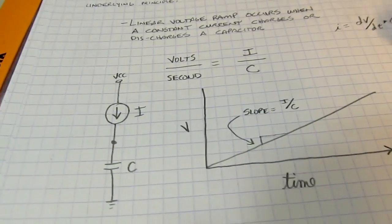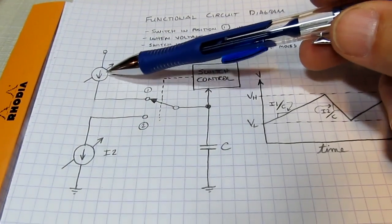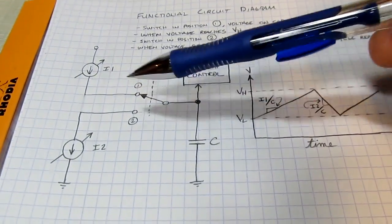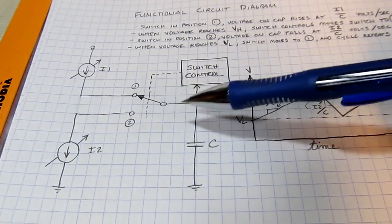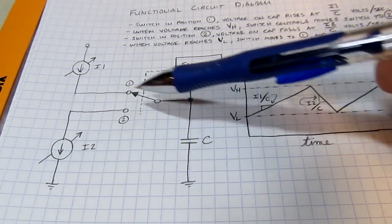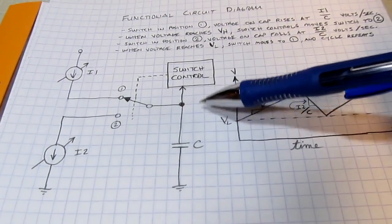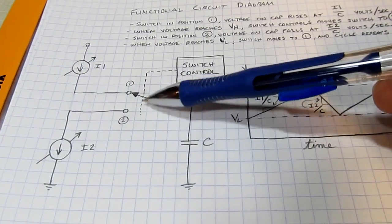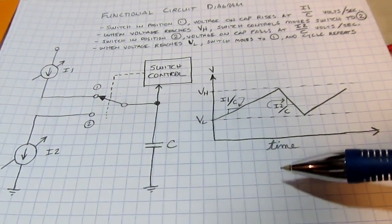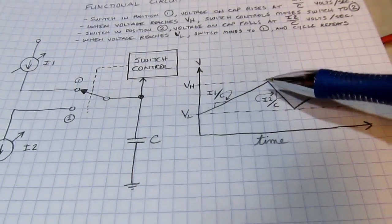Let's look at the underlying pieces we need. The overall concept is to have an adjustable current source that pushes current out of a node, and another adjustable current source that pulls current from that same node. A capacitor sits at that node, and we either charge it with the upper current source or discharge it with the lower one, switching back and forth. A monitoring circuit will periodically switch from one current source to the other.